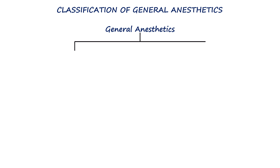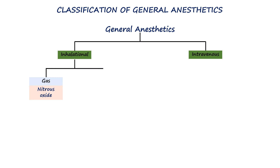General anesthetics are administered via two routes: inhalational and intravenous. Inhalational agents are either gas or volatile liquids. They are usually used for maintenance of anesthesia but can also be used for induction.